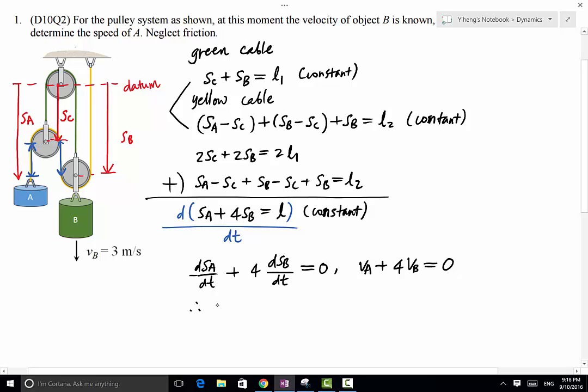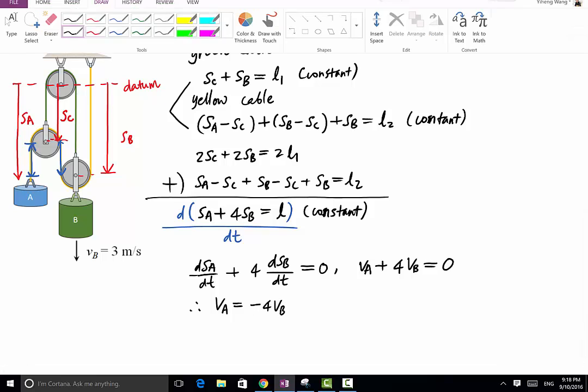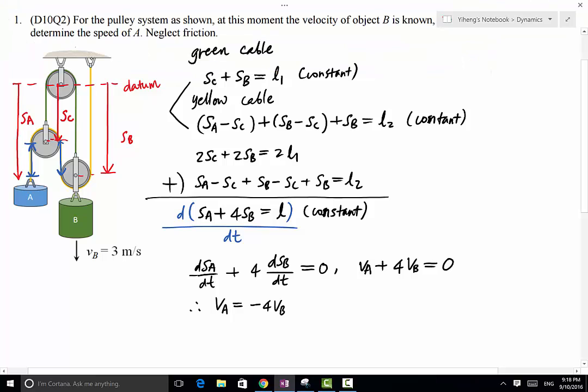Therefore, VA equals to negative 4VB. And if we establish that downward is the positive Y direction, then this equals to negative 4 times 3, which is negative 12 meters per second. The negative sign indicates that the direction is opposite of the defined positive direction. Therefore, it's upwards. So that is the answer for this problem.